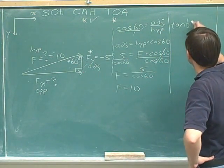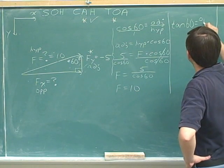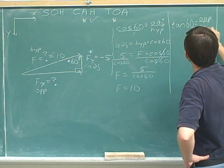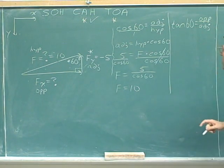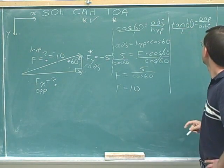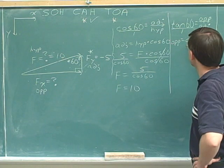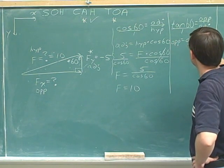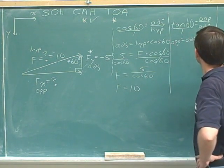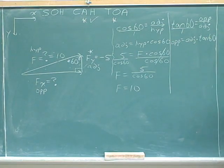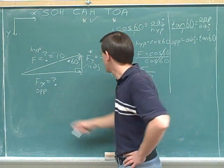So the tangent of 60 is TOA, opposite over adjacent. Let's cross multiply. One times the opposite side is the opposite side. And then we have the length of the adjacent side times the tangent of 60.